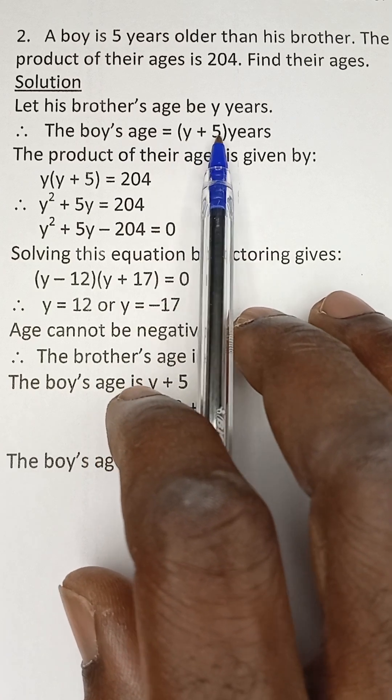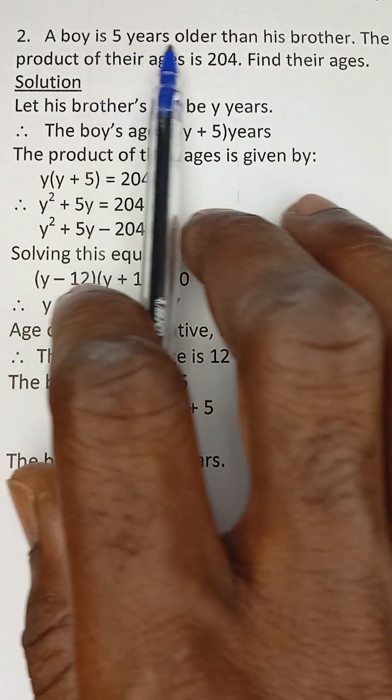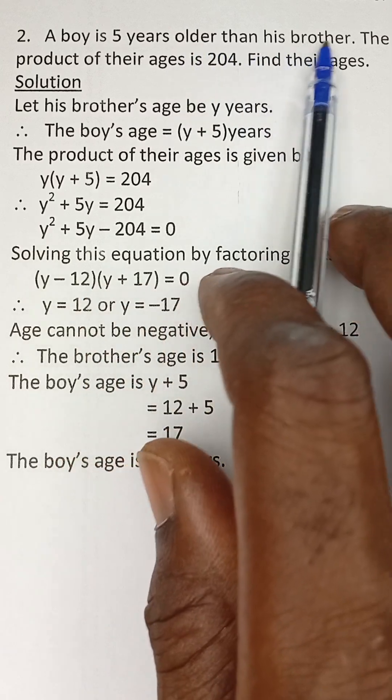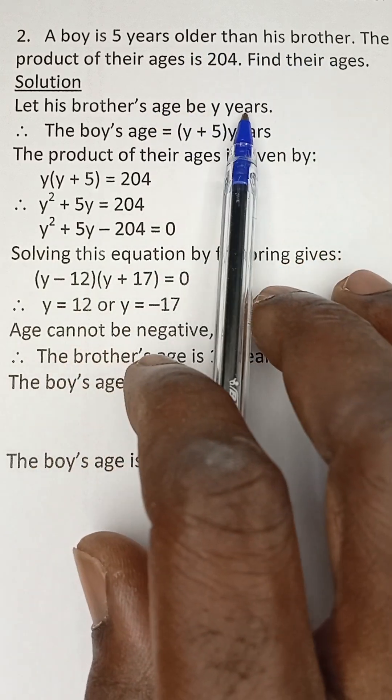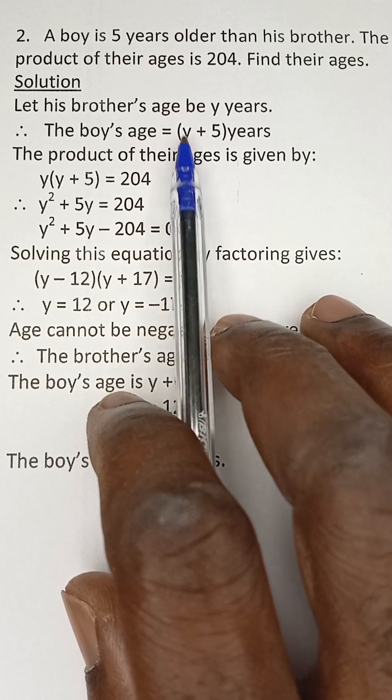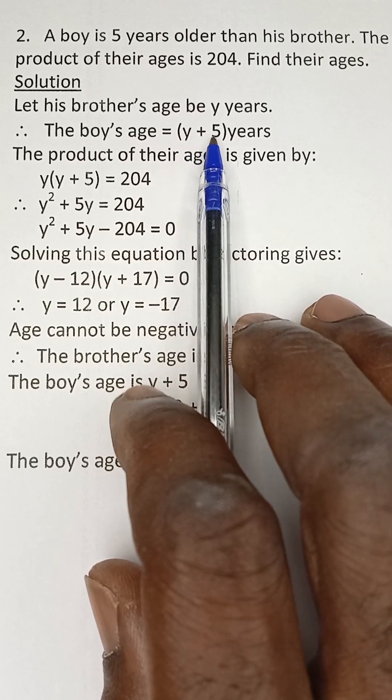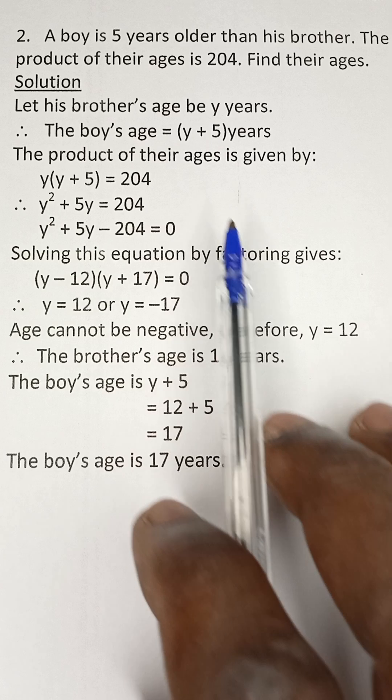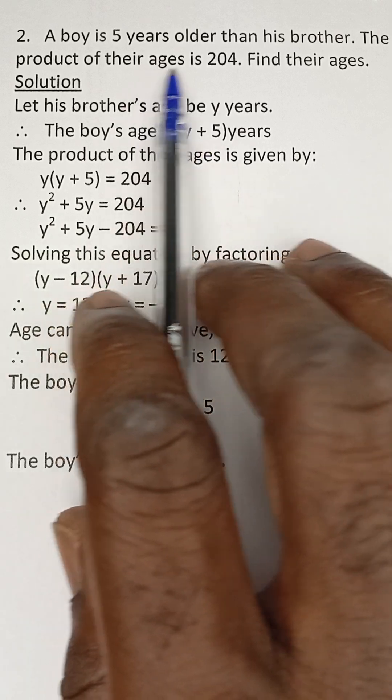Why y plus five? Because the boy is five years older than his brother. So if the brother is y years, since the boy is five years older than his brother, then the boy's age will be y plus five, that is five years older than his brother which is y years.